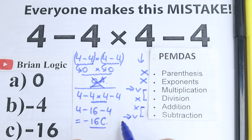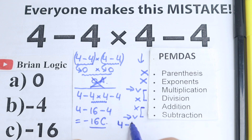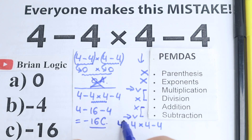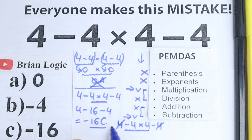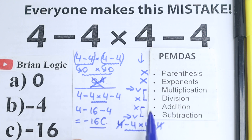If you know a math trick: in 4 minus 4 times 4 minus 4, we can cancel the positive 4 and negative 4, leaving us with minus 4 times 4, which gives minus 16. That's another method to reach the same answer, but I wanted you to understand the step-by-step method using PEMDAS.